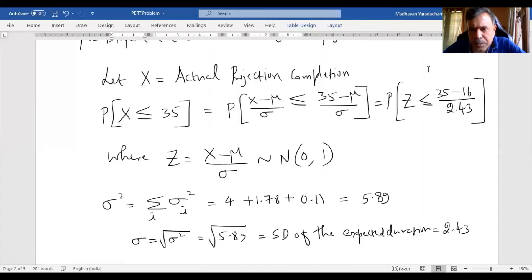So here we will substitute 2.43. That means we are supposed to find probability of Z less than or equal to 35 minus 16, that is 19 divided by 2.43. That works out to 7.82.